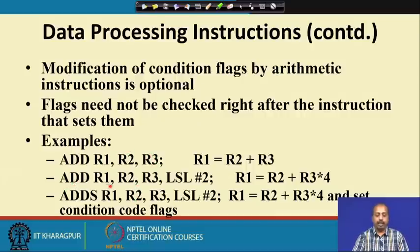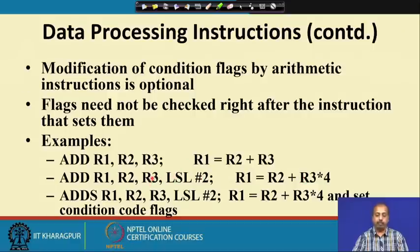The next instruction, ADD R1, R2, R3 LSL #2, is the case where the second operand is a register shifted left by 2 bits. The overall execution is R1 = R2 + (R3 × 4), because R3 is left-shifted by 2 bits, which multiplies it by 4.